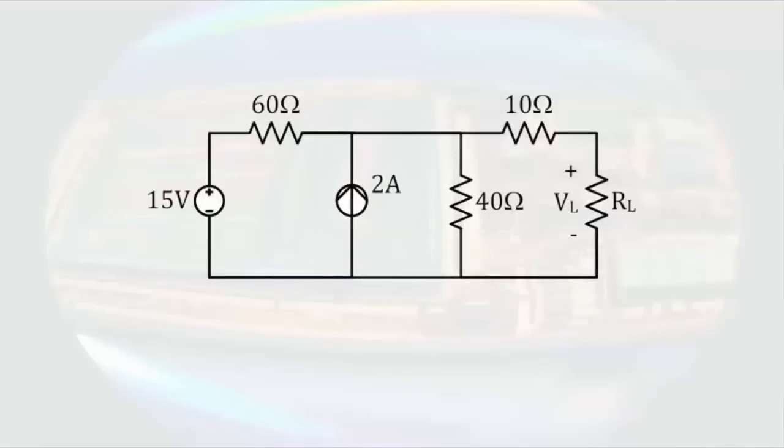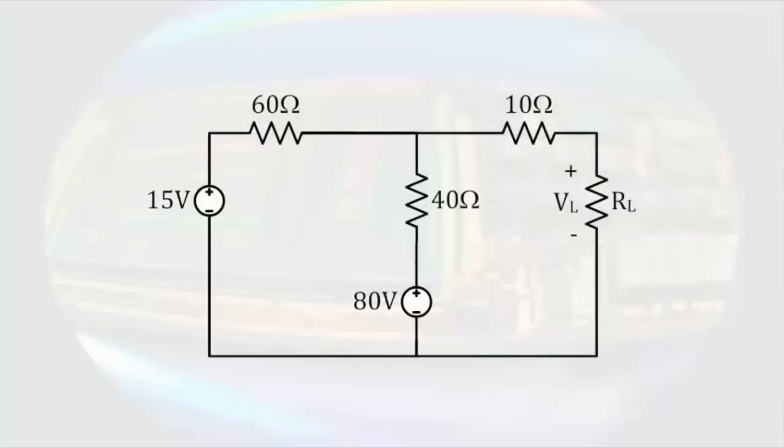Another point, any time we do a source transformation, the transformed source must exist between the same two nodes as it did before the transformation. So that this current source in parallel with a resistor would transform into this voltage source in series with a resistor like this.